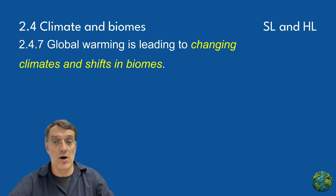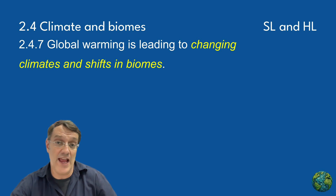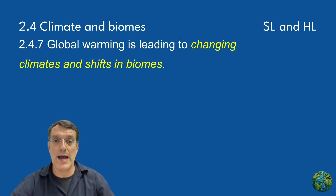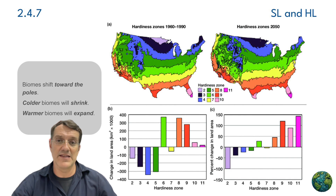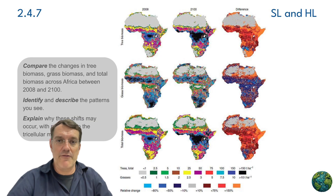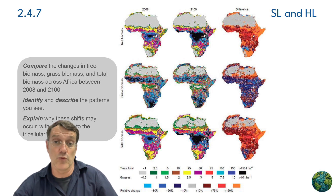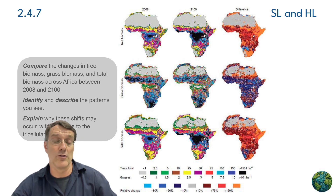Global warming is fundamentally altering these long-established patterns. As average temperatures rise, we're seeing shifts in biome boundaries and changes in ecosystem function, happening more rapidly than many species can adapt. These maps of the hardiness zones in North America show how climate zones are shifting towards the poles — compare the hardiness zones from 1960–1990 with projections for 2050 and notice how zones are moving northward, requiring species to either adapt, migrate, or face local extinction. Looking at changes across Africa, we can see dramatic shifts in tree biomass, grass biomass, and total biomass from 2008 projected into 2100. The tricellular model helps us understand why these changes follow particular patterns as global temperatures rise.